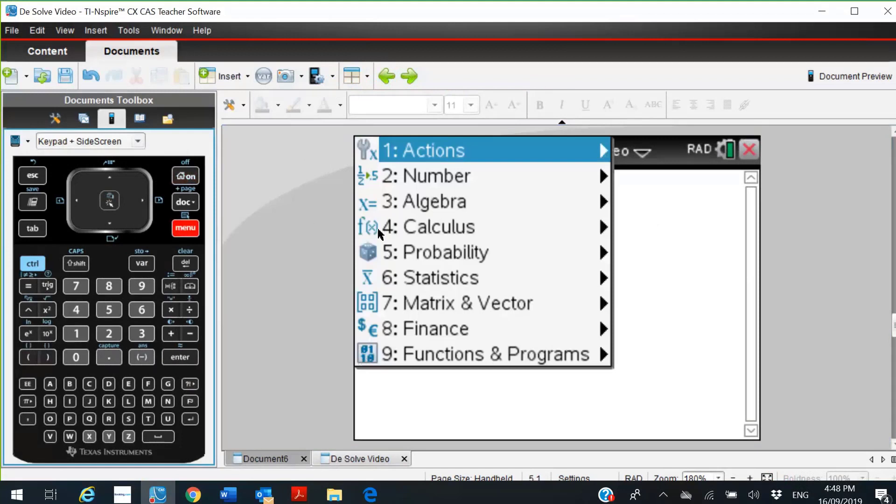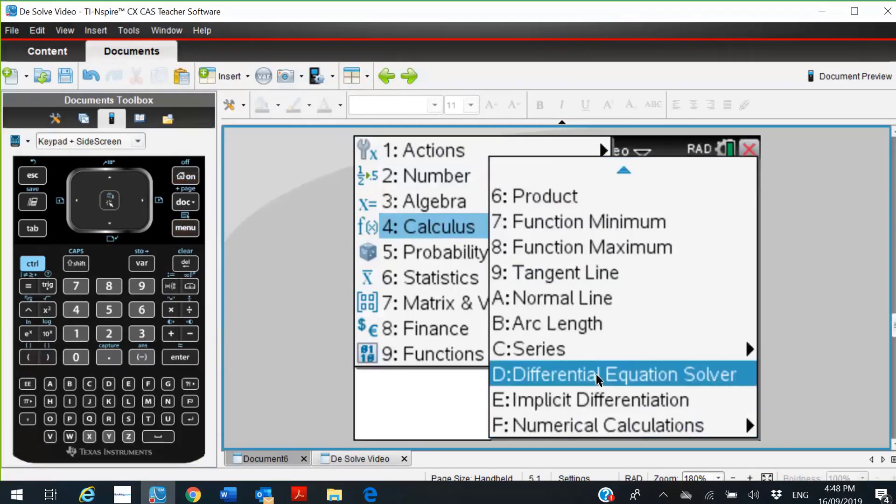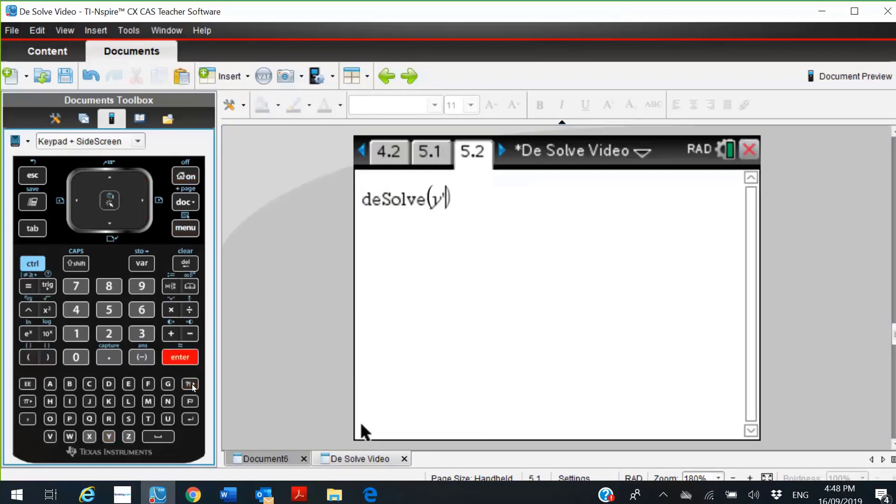Menu, calculus, come down till you find differential equation solver, option number D. Type in y dashed equals 2 times y plus 5 all squared. Now this time we're going to give an initial condition, so we actually have to type in the word and. So we're going to have to press space and actually type in the word and, and, space.